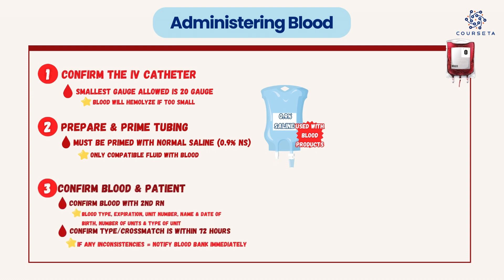Number three: confirm the blood and the patient. After you have everything ready and the blood is in the room, you want to confirm the blood with a second nurse and match it to the patient information. What you're typically confirming is the blood type, the expiration of that blood, the unit number, the patient's name and date of birth, the number of units and type ordered, and that the type and crossmatch was collected within 72 hours of when you're giving that blood. If there are any inconsistencies, you need to notify the blood bank immediately and return the blood.